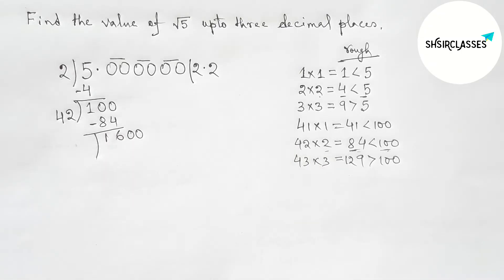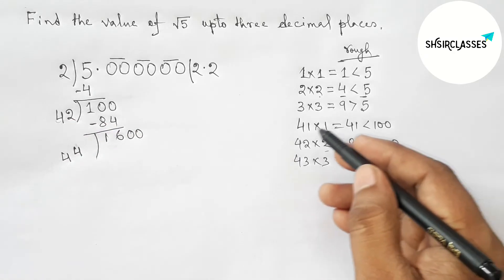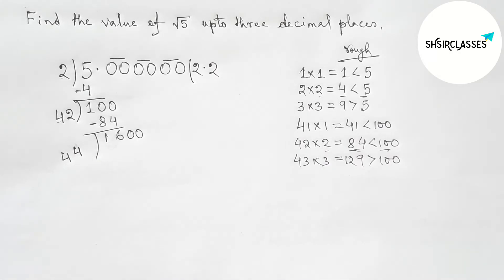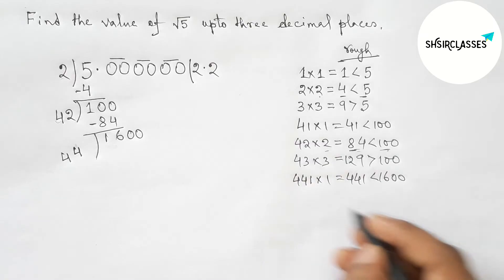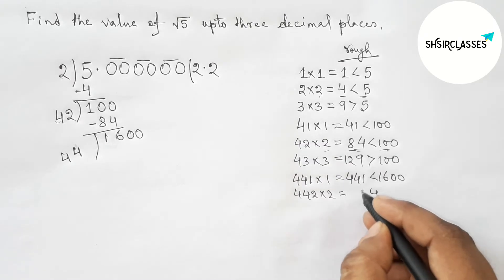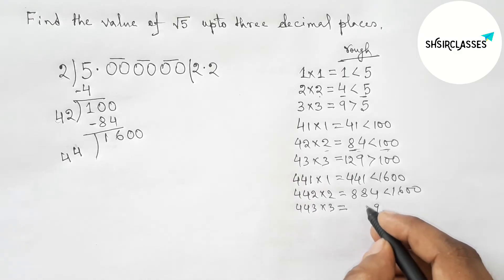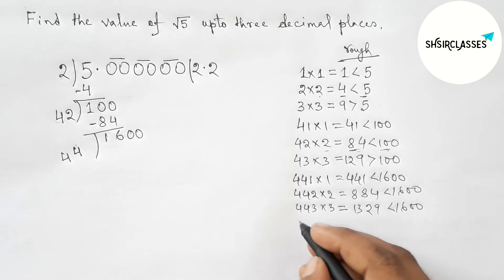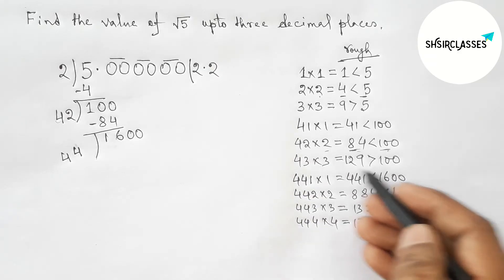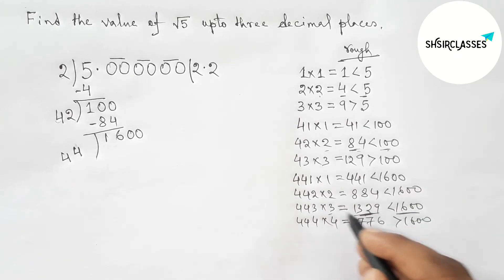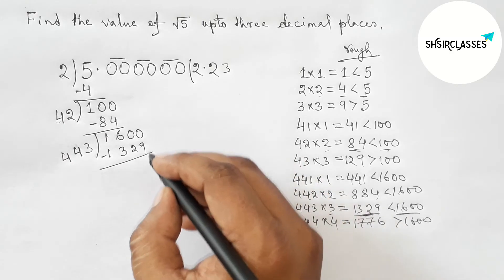Write down the second pair of zeros and draw the division line. Taking the double of 22 gives 44. Put a number beside 44 and multiply by that number which is less than 1600. Putting 1, 2, and 3 — all less than 1600. Putting 4 gives a result greater than 1600. So 3 is less than and more closer to 1600. Putting 3 here: 443×3=1329. Subtracting gives a remainder of 1.